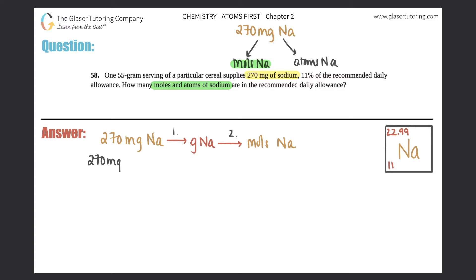So let's try it out. 270 milligrams of sodium times that by a ratio, in which we put the milligrams of sodium on the bottom and grams of sodium on the top, because that's what we're searching for at the first one.